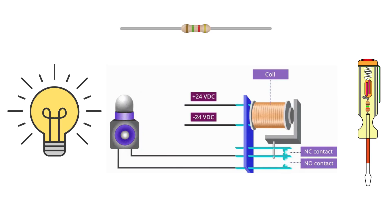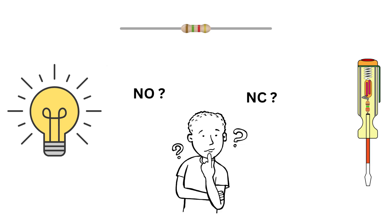Now to make this even more interesting, contactors come with two types of contacts: normally open, that is NO, and normally closed, that is NC. These might sound a little confusing, but don't worry, we are going to break it down.